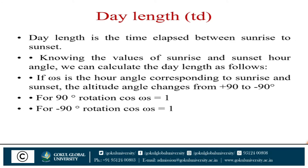Most important definition: Day length (td). Day length is the time between sunrise and sunset. Knowing the values of sunrise and sunset hour angles, we can calculate the day length. If ωs is the hour angle corresponding to sunrise and sunset, the altitude angle changes from plus 90 degrees to minus 90 degrees for a 180-degree rotation; cos(ωs) equals 1 at minus 90 degrees rotation, cos(ωs) equals 1.